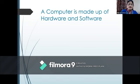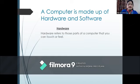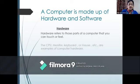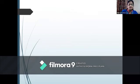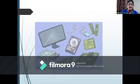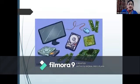A computer is made up of hardware and software. What is hardware? Hardware refers to those parts of a computer that you can touch or feel. A CPU, monitor, keyboard or mouse etc. are examples of computer hardware. This is the picture of computer hardware.